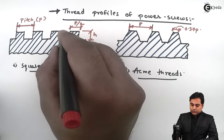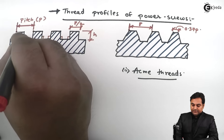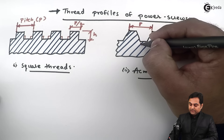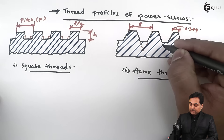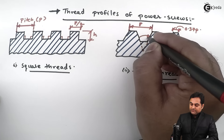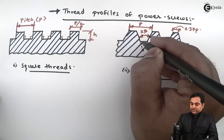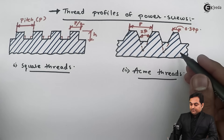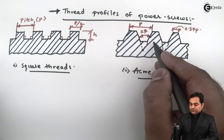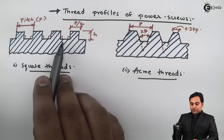Compared to square threads, which had a 90-degree angle, ACME threads are inclined at a different angle. Extending these lines, they meet at an angle called 2β — the angle between the thread flanks. As we can see, at the bottom of the ACME thread the area is more, which offers additional strength to ACME threads compared to square threads.